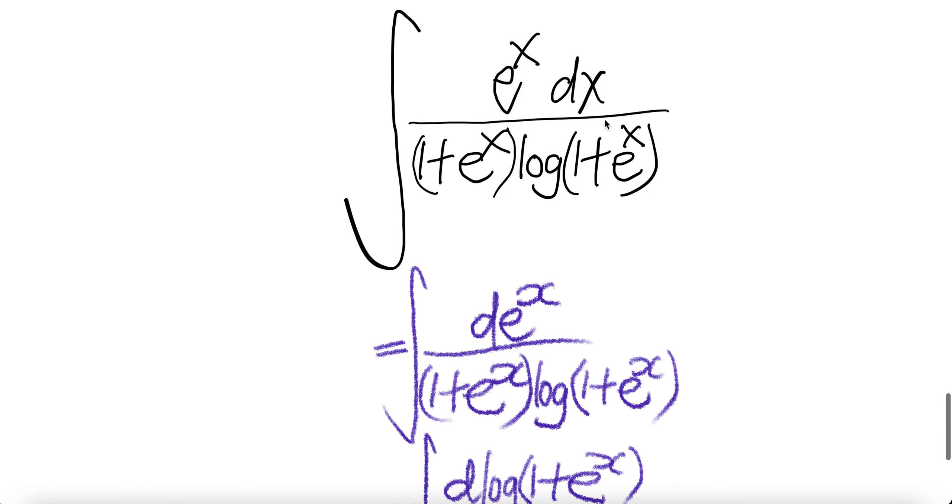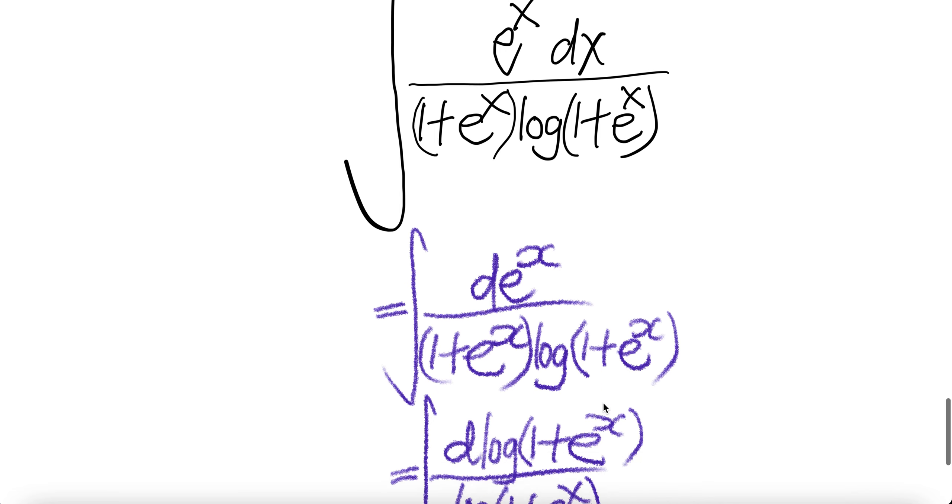Push e to the power x into dx, so you have e to the power x dx divided by (1 plus e to the power x) times log(1 plus e to the power x).